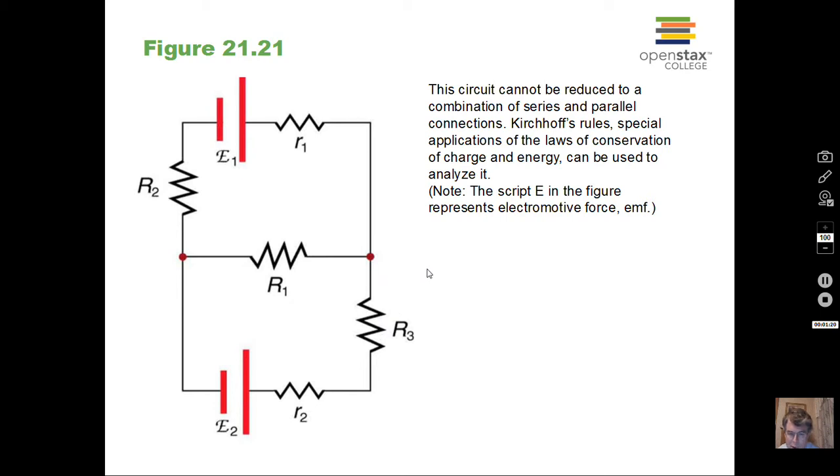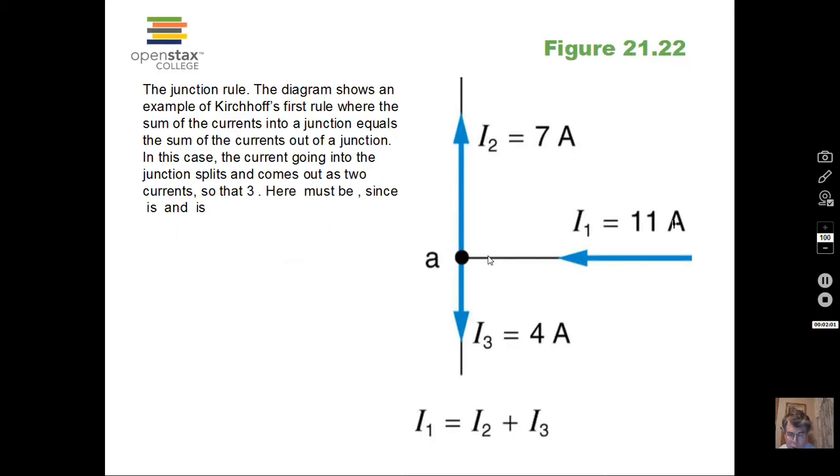Our goal is, in this case, we have three unknowns: the current in the top branch, the current in the middle branch of the circuit, and the current in this bottom branch of the circuit. That's three unknowns. Mathematically then, we need three equations so we can combine those equations and solve for the unknowns. So that's our task: use Kirchhoff's rules, write down a number of equations equal to the number of unknown currents. The typical problems we'll run across, there'll be three unknown currents. So that's where we're headed.